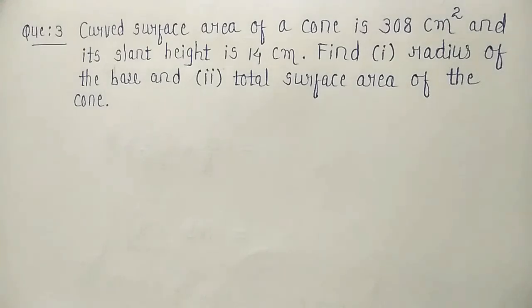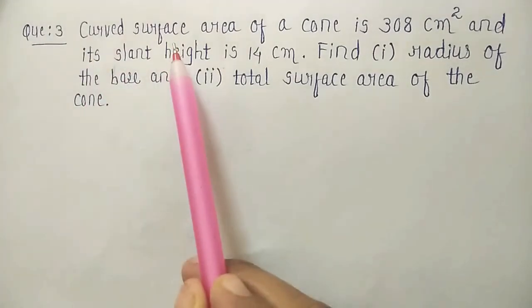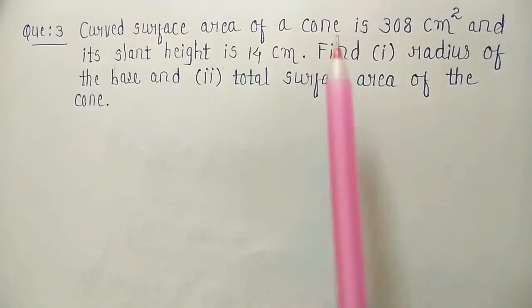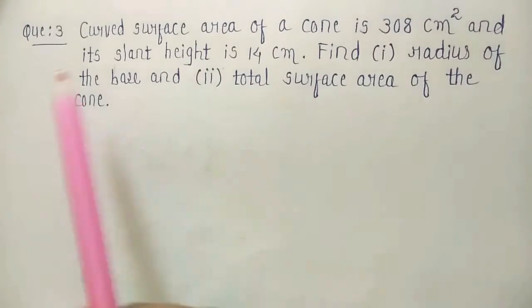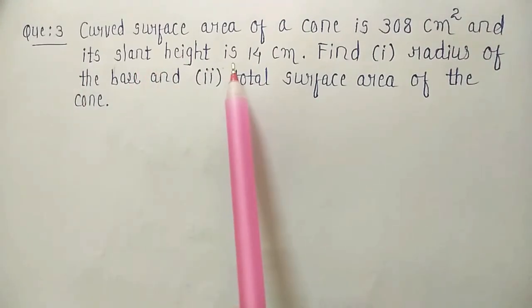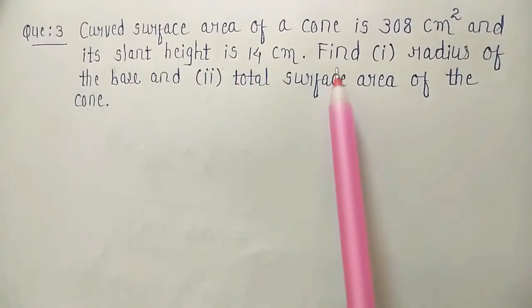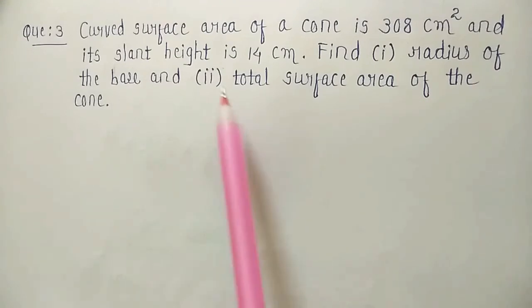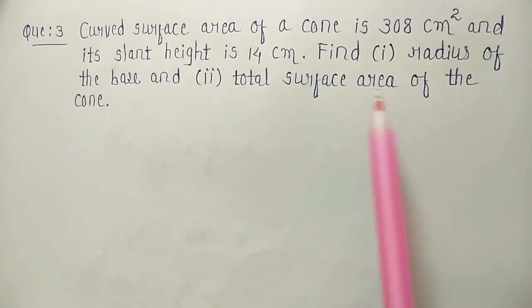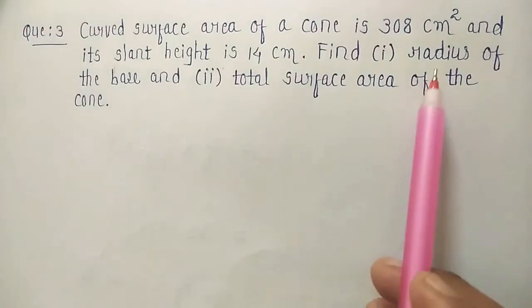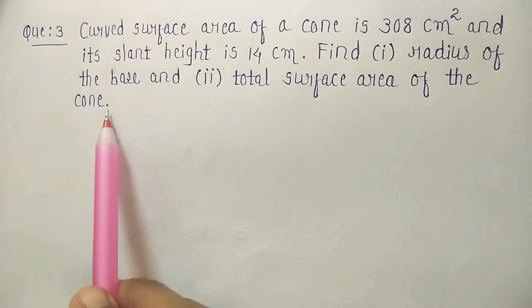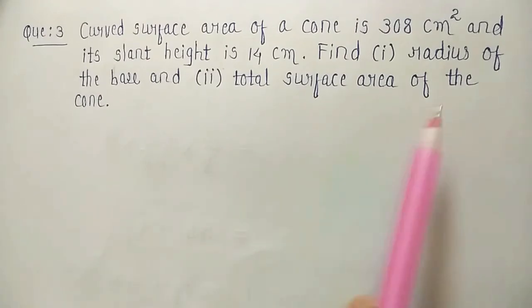Question number 3 of exercise 13.3. The curved surface area of a cone is 308 cm squared and its slant height is 14 cm. Find the radius of the base and the total surface area of the cone. Here we have to find two things: one, the radius of the base, and second, the total surface area of the cone.